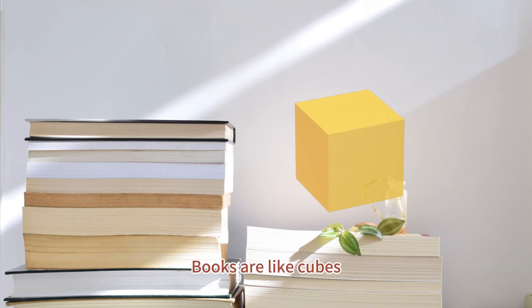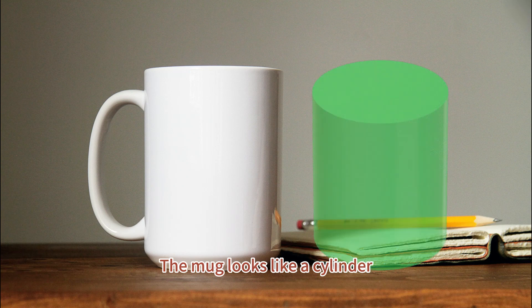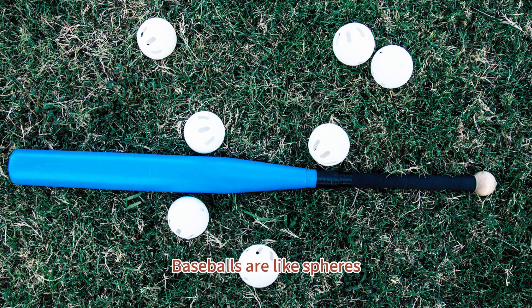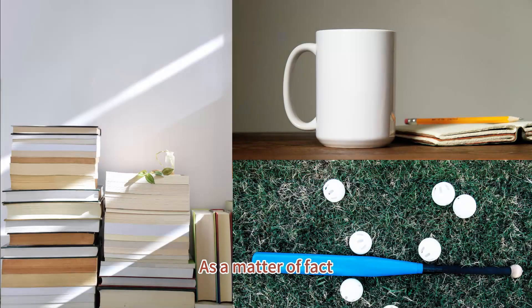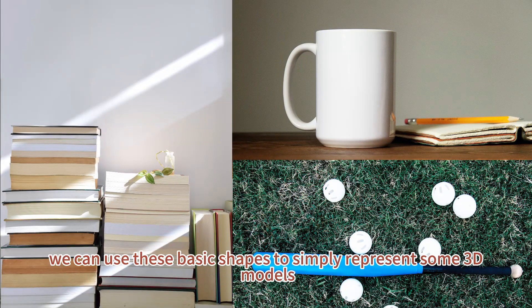Books are like cubes. The mug looks like a cylinder. Baseballs are like spheres. As a matter of fact, we can use these basic shapes to simply represent some 3D models.